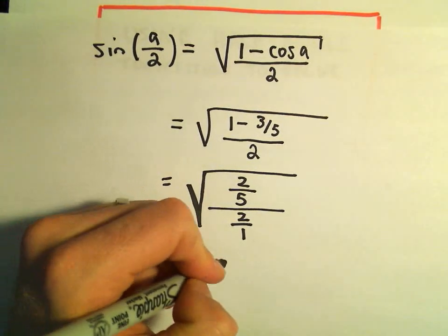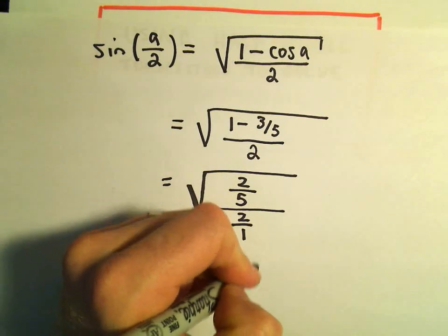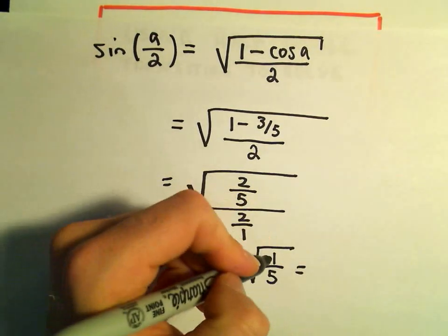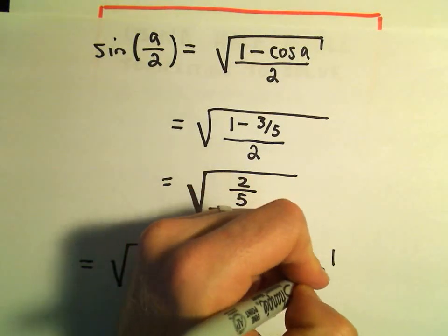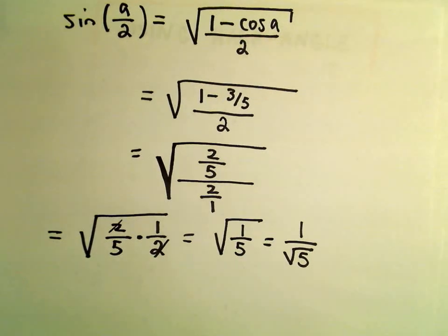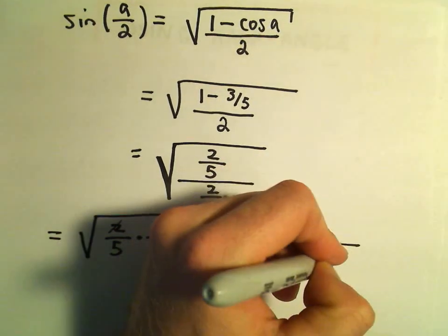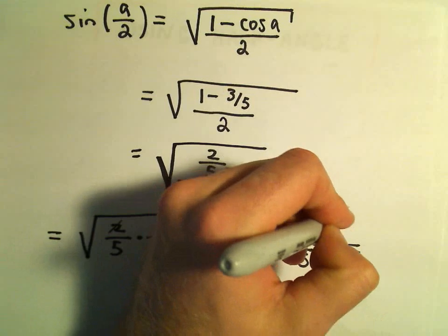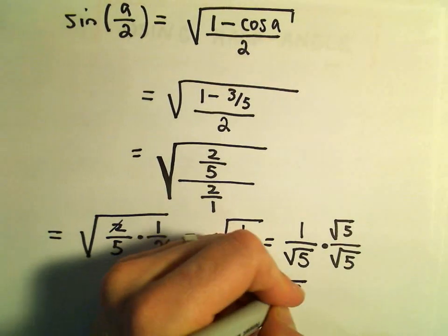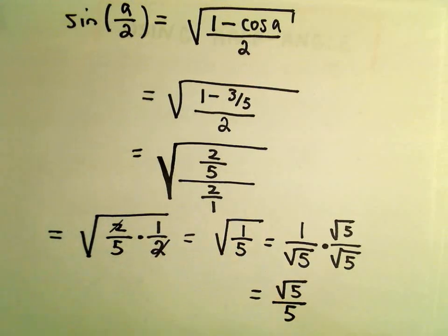Those would simply cancel out, and we would be left with the square root of 1 over 5. We could also take the square root of the numerator, which is 1. The square root of the denominator would just be root 5. We could also rationalize the denominator by multiplying top and bottom by square root of 5. And that'll simply leave us with root 5 over 5.